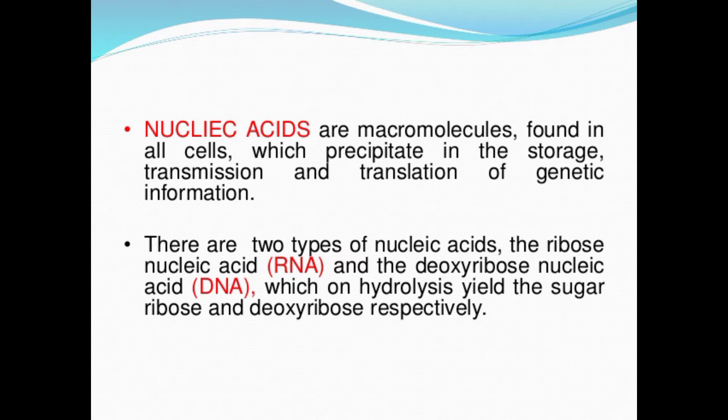There are two types of nucleic acid: ribonucleic acid, called RNA, and deoxyribonucleic acid, called DNA, which on hydrolysis yield the sugars ribose and deoxyribose respectively. Nucleic acid is totally dependent upon nucleotides and nucleosides — nucleoside plus nucleotide together form the nucleic acid.